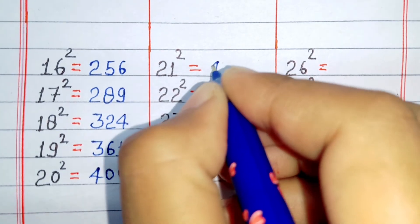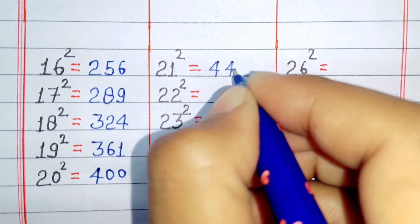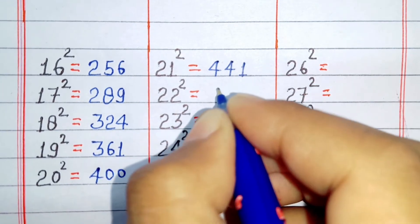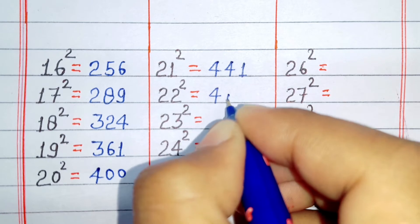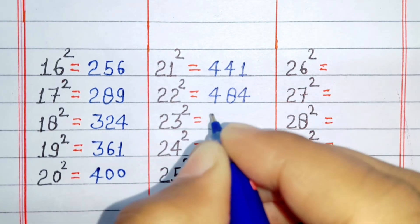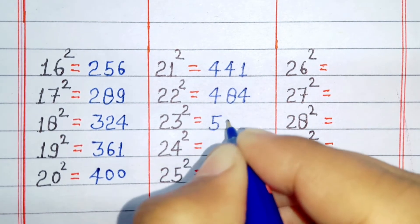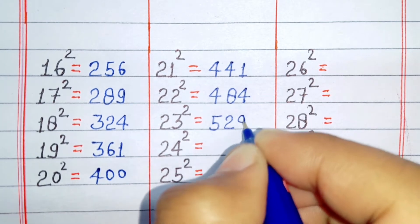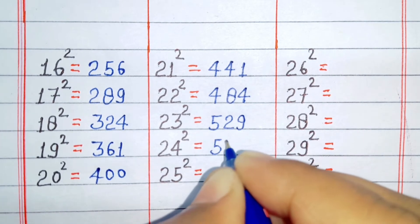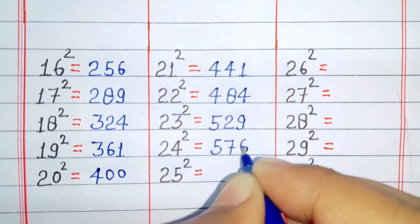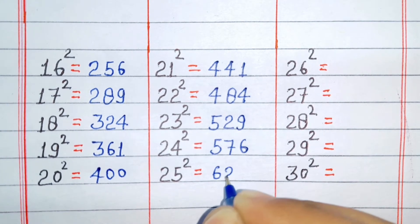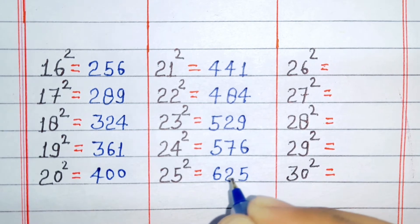Square of 21 is 441. Square of 22 is 484. Square of 23 is 529. Square of 24 is 576. Square of 25 is 625.